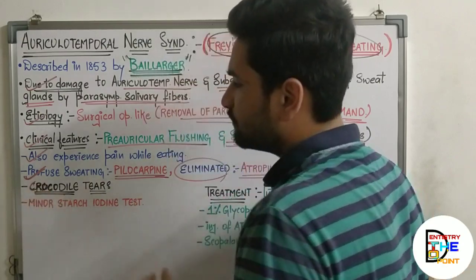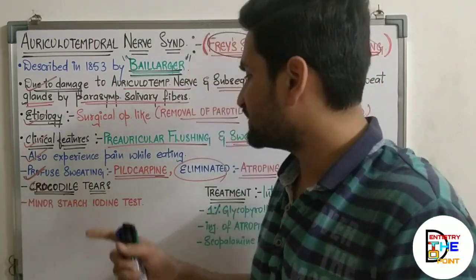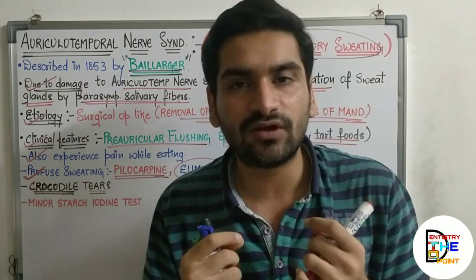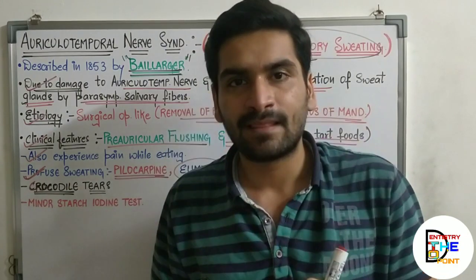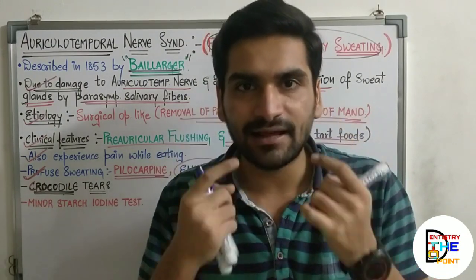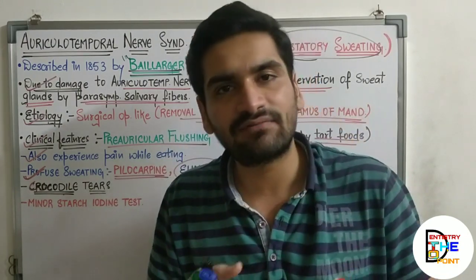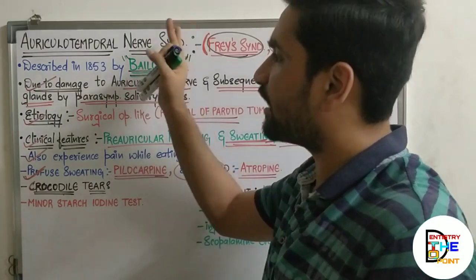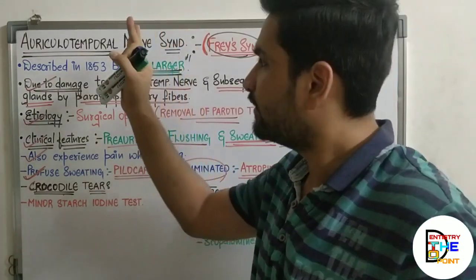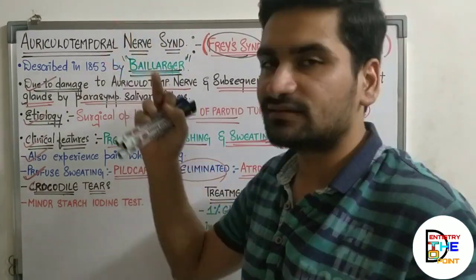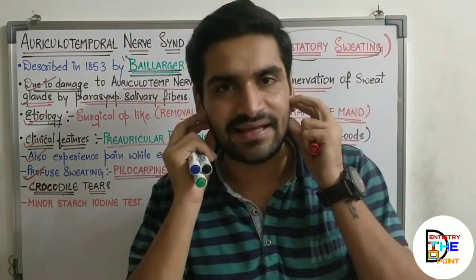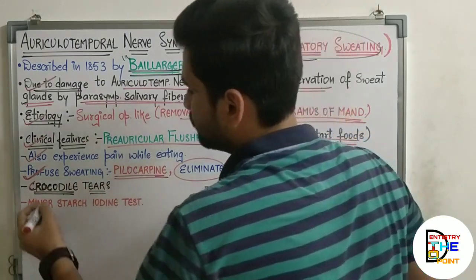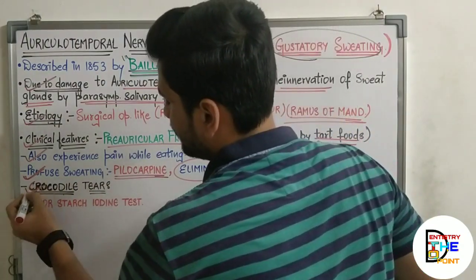There is one more related term: Crocodile Tears Syndrome. It is almost similar, but instead of sweating in the pre-auricular region, there will be tears flowing from the eyes — lacrimation — while consuming hot and spicy food.